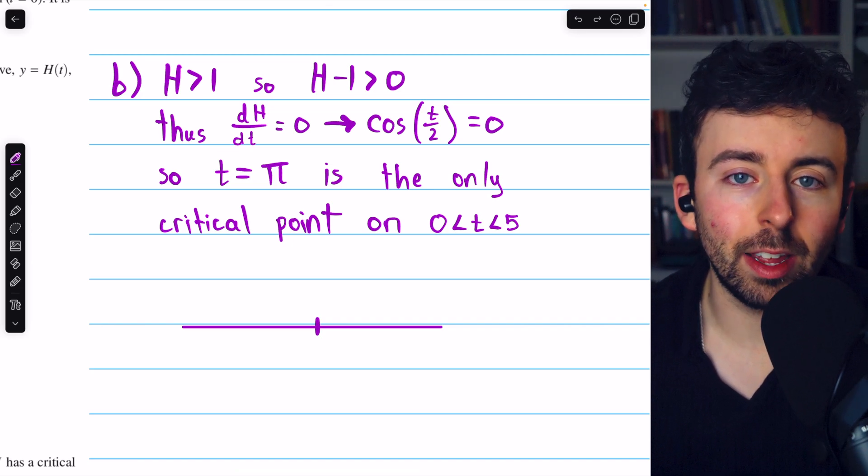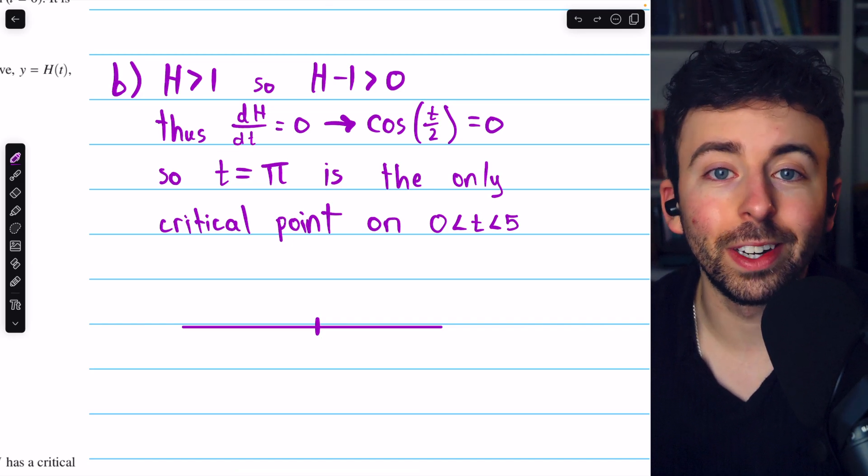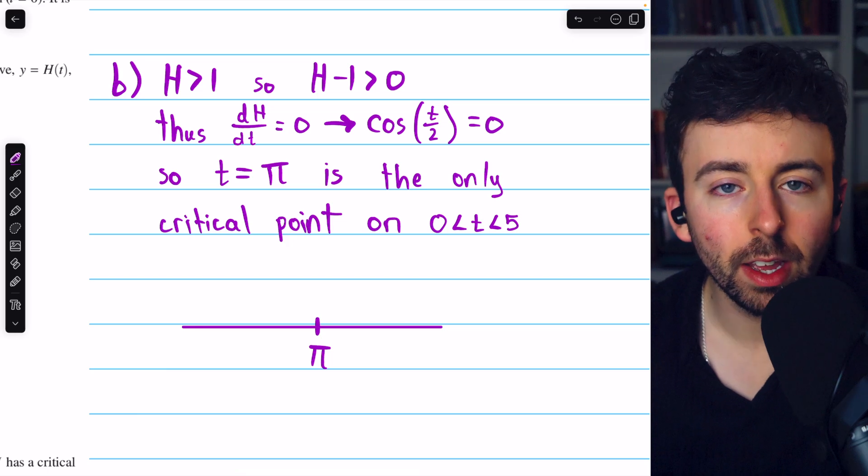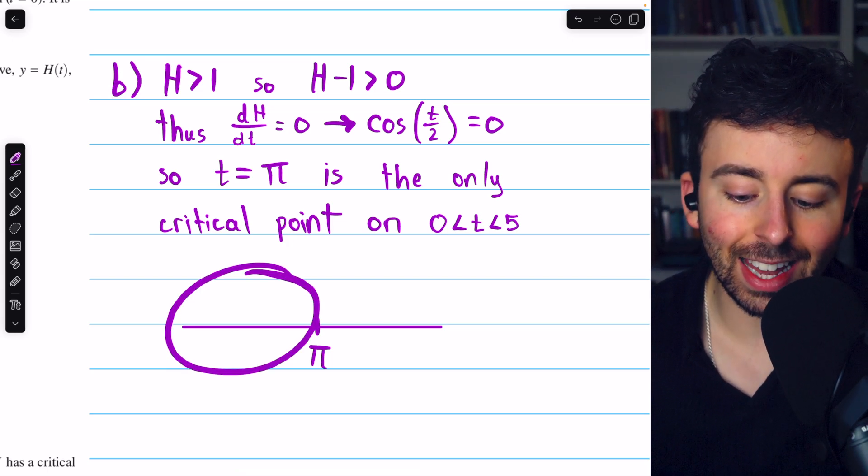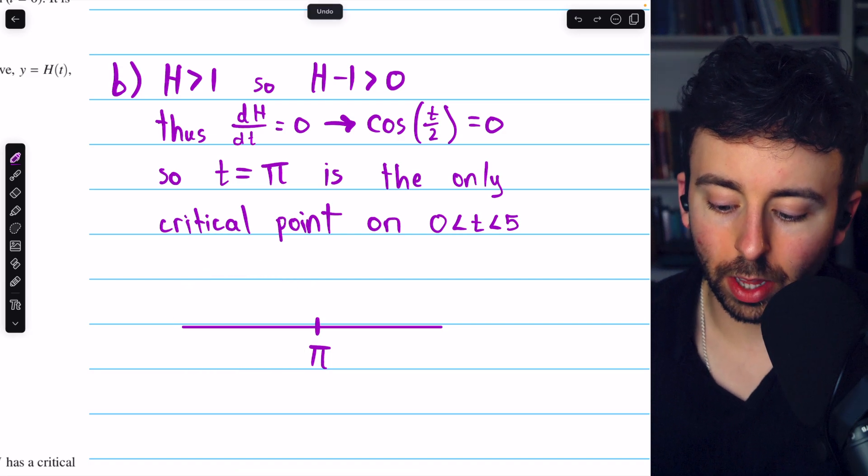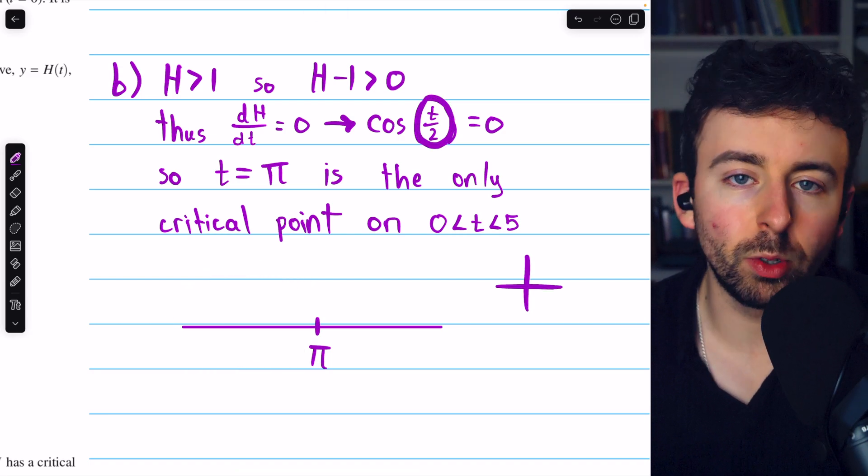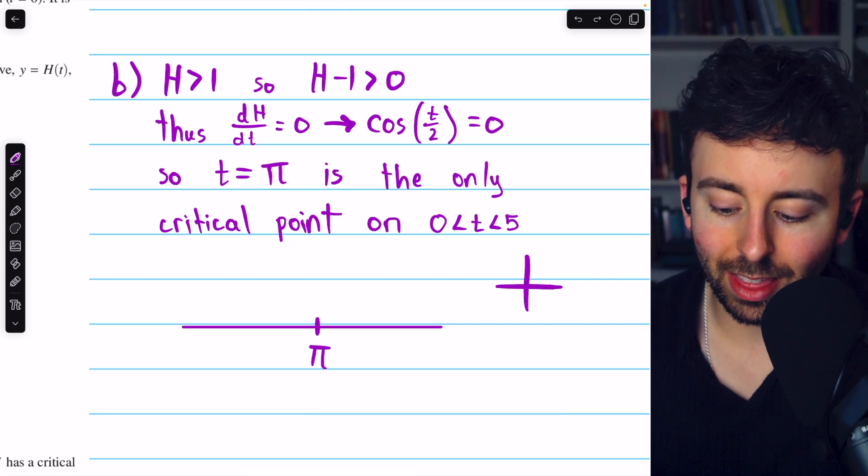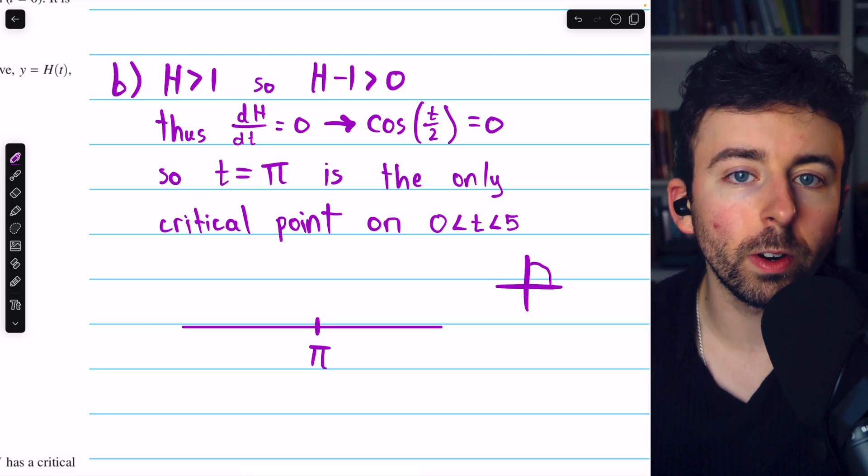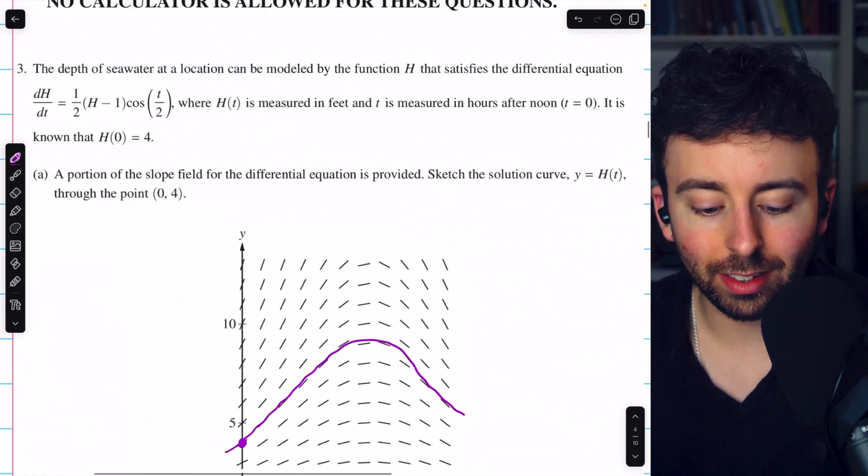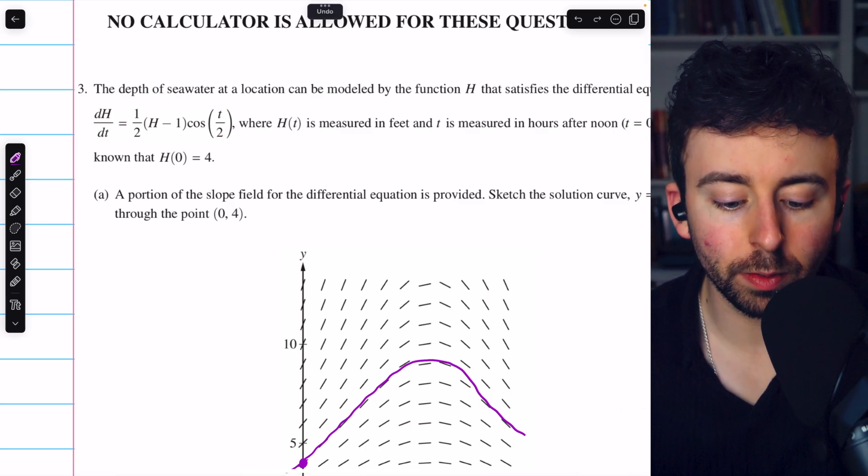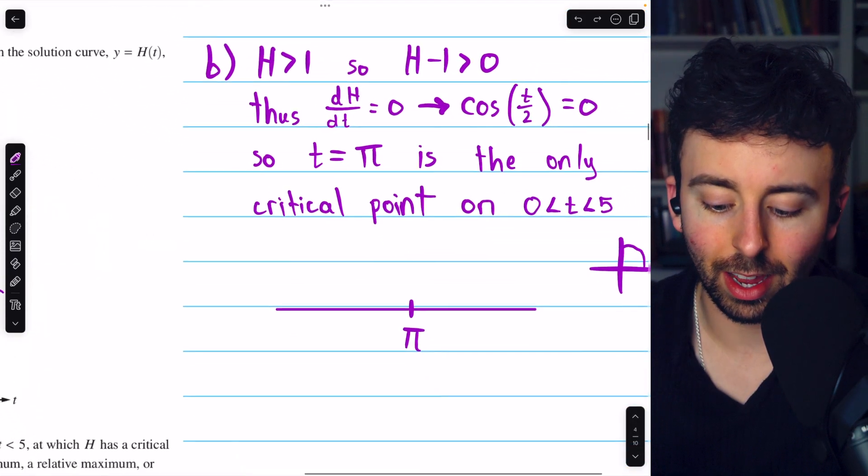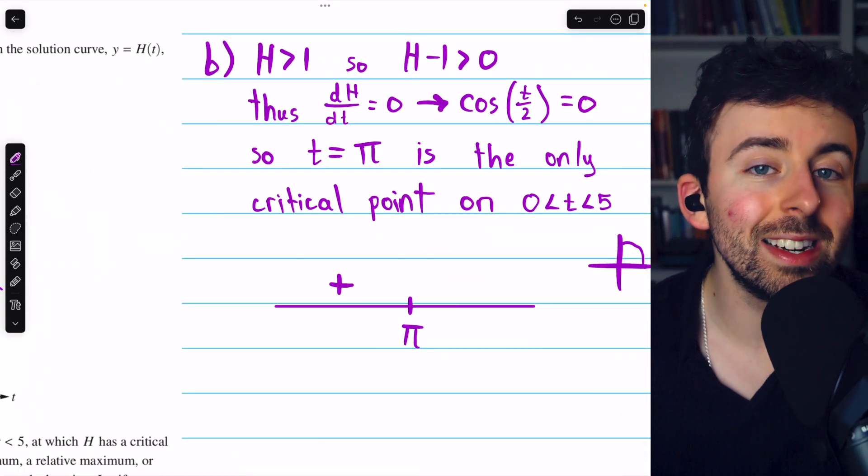Now we have to determine if this critical point is the location of a maximum, minimum, or neither. To do that, we'll use a quick sign chart. Here's the critical point at t equals π. What's the sign of the derivative to the left of t equals π? Well, think about the unit circle. If t is between zero and π, then the input, t/2, is going to be at this part of the unit circle, in the first quadrant, where the x-coordinate is positive. Thus, the derivative will be positive, because one-half is positive, h minus one is positive, and cosine is positive. That's when t is between zero and π.